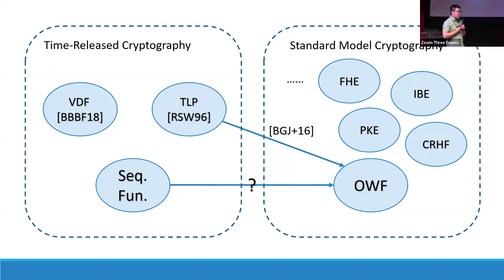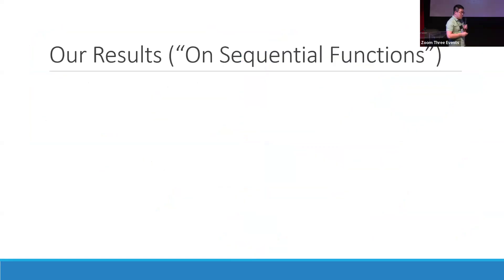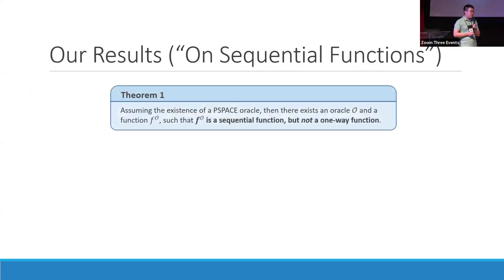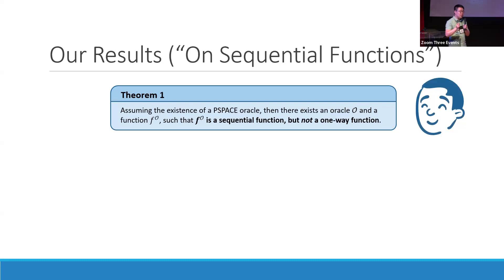From a personal perspective, I'm very concerned because if sequential functions imply one-way functions, that means they cannot exist in Passyland, which means I'll be stuck there forever. But luckily, within this paper, we are able to show an oracle separation between sequential functions and one-way functions. Specifically, we show that there exists an oracle and a function relative to the oracle that is sequential but not one-way.